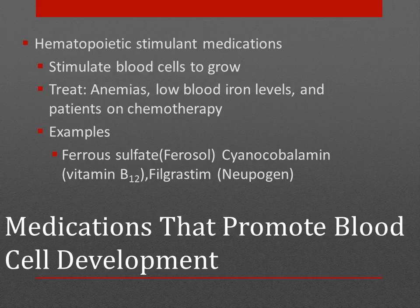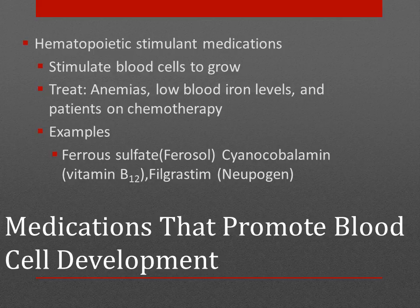Hematopoietic stimulant medications stimulate the growth of blood cells. These medications are used to treat anemia, low blood iron levels, and patients on chemotherapy, who have lowered blood levels due to bone marrow suppression. Hematopoietic medications include ferrous sulfate (iron), cyanocobalamin (vitamin B12), and filgrastim (Neupogen).